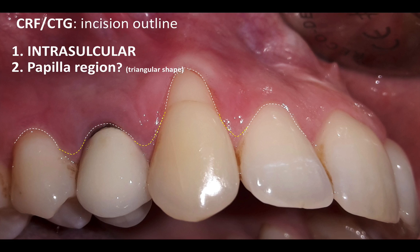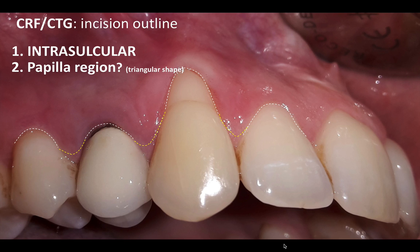A lot of doctors are having some trouble with a split-thickness flap because they think the flap needs to be split right at the gingival margin, which is not practical. What I recommend: start your flap as a full-thickness flap, and only after two or three millimeters transition into a split-thickness flap. So technically, this is a combined flap — starting as full and then continuing as split — and that allows the coronal repositioning and the flexibility of the flap.